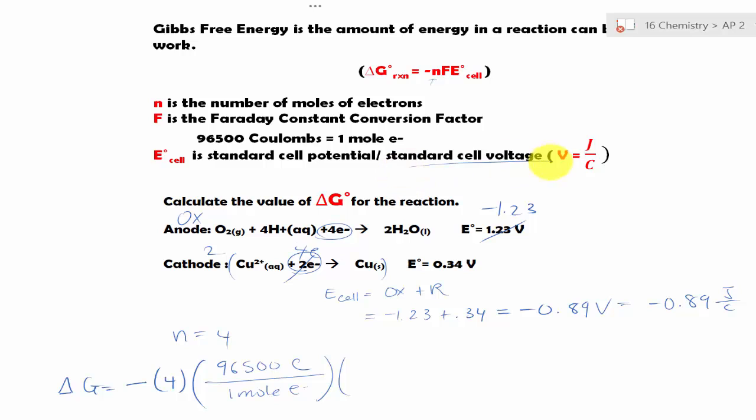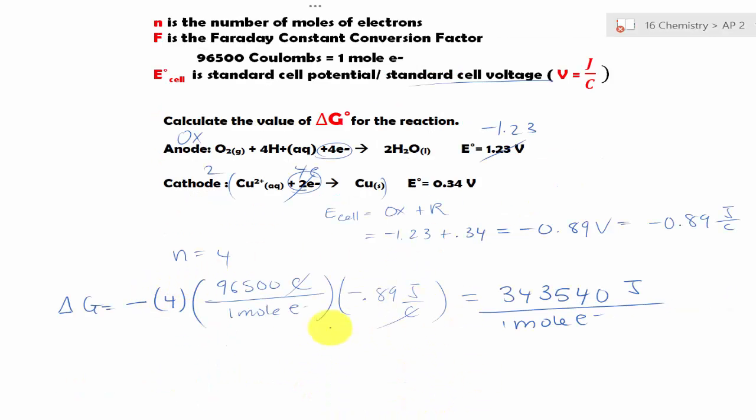Times the E°_cell or the standard cell voltage. -0.89 joules over coulomb. And coulomb cancels out. Then we plug everything into the calculator.